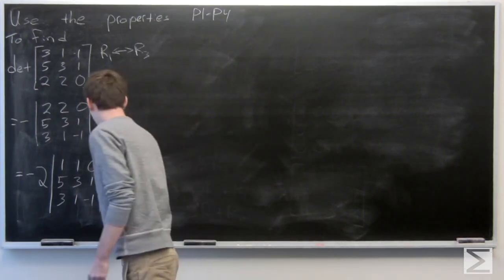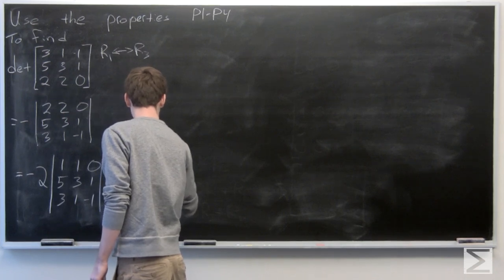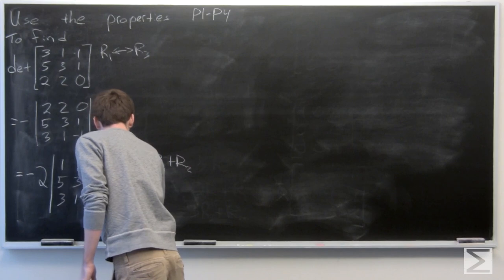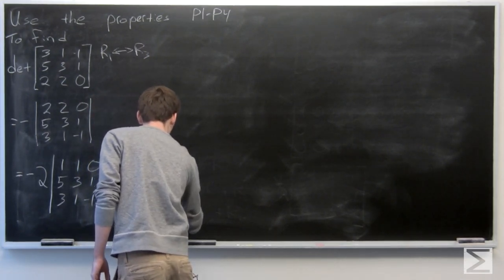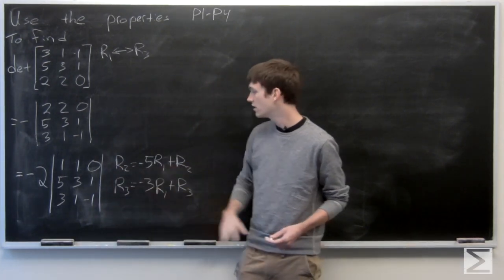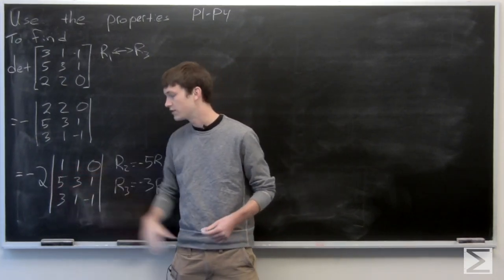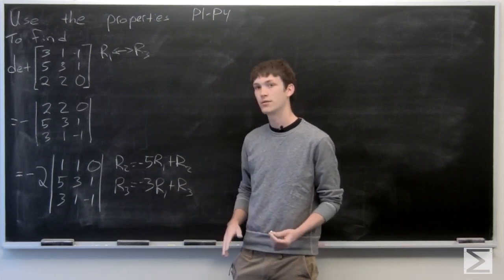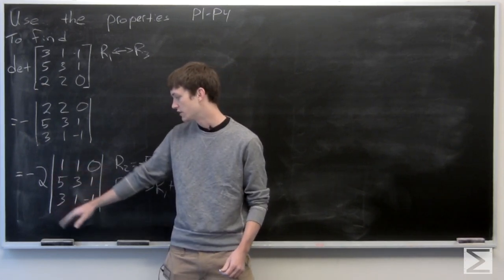And now we want to get rid of the 5 and 3. So we're going to write row 2 is equal to negative 5 times row 1 plus row 2. So negative 5 plus 5 is 0. And then for row 3, we're going to let that be negative 3 times row 1 plus row 3. So negative 3 plus 3 is 0.